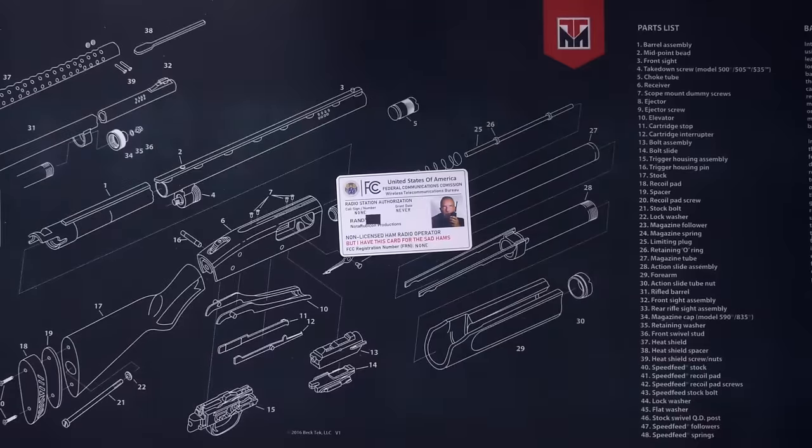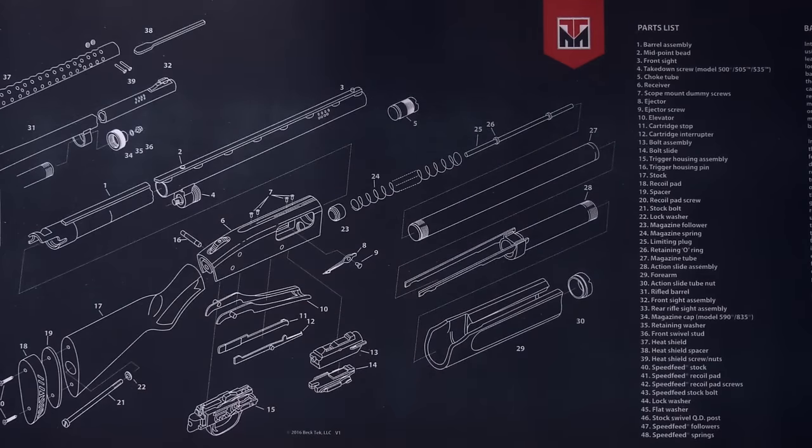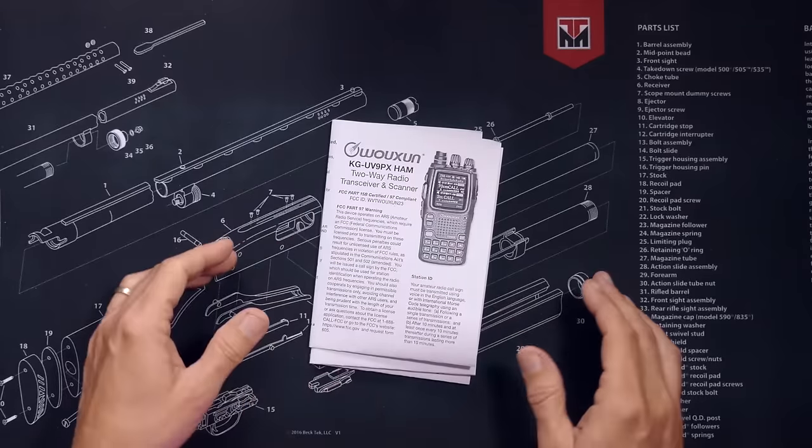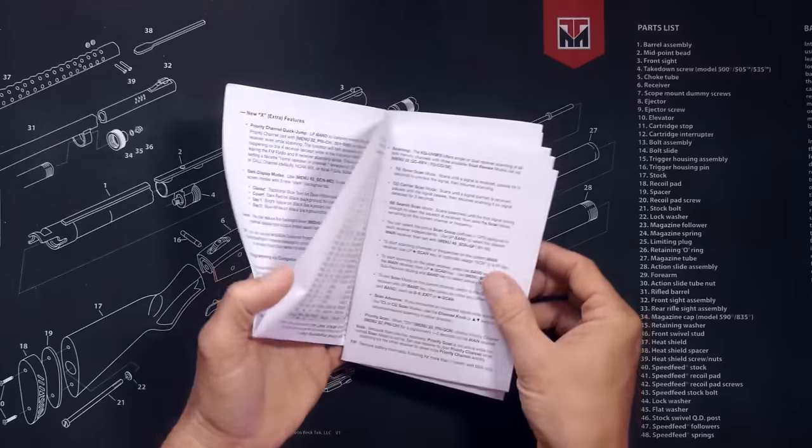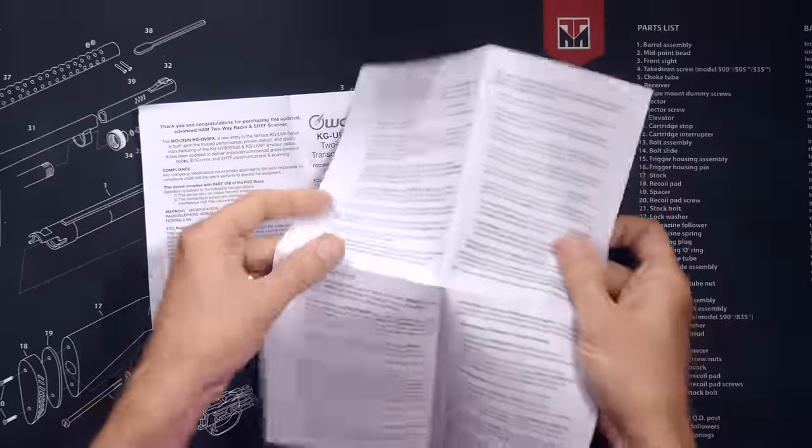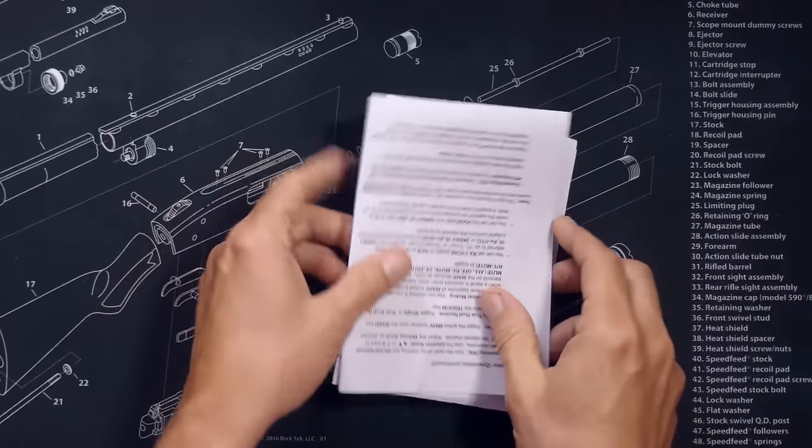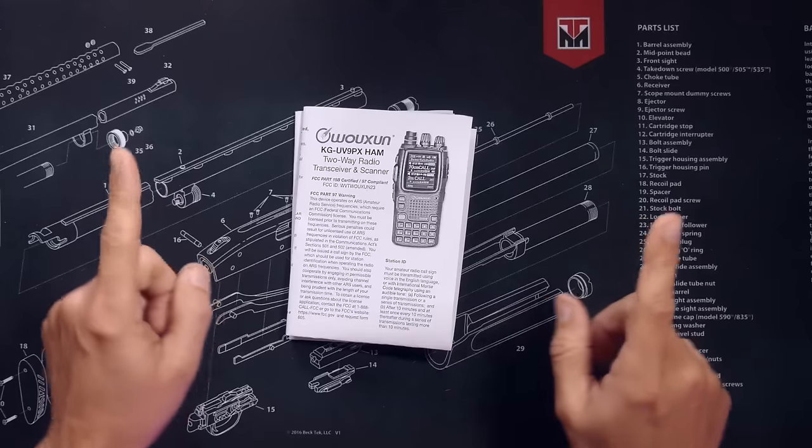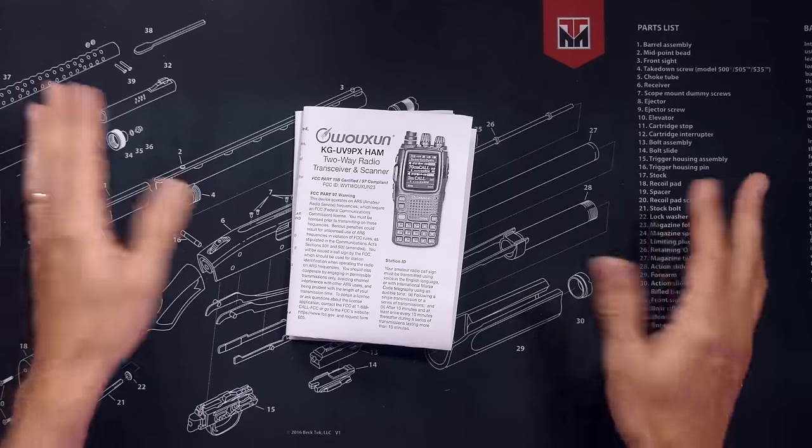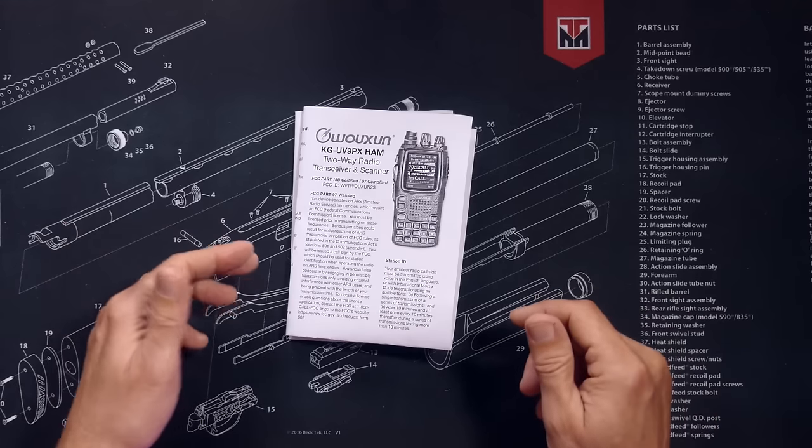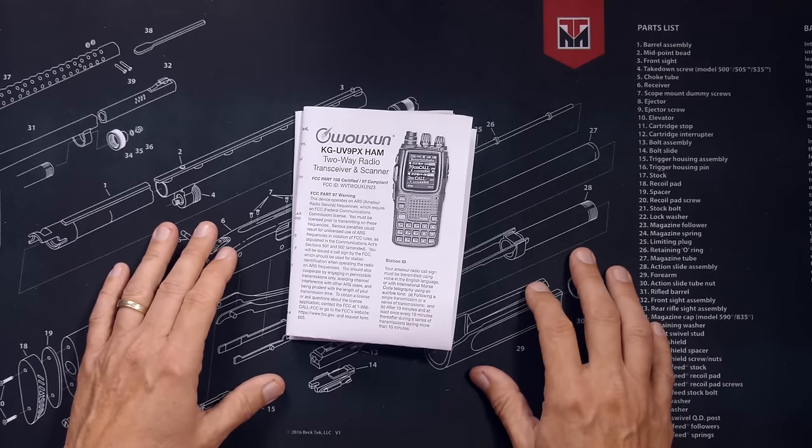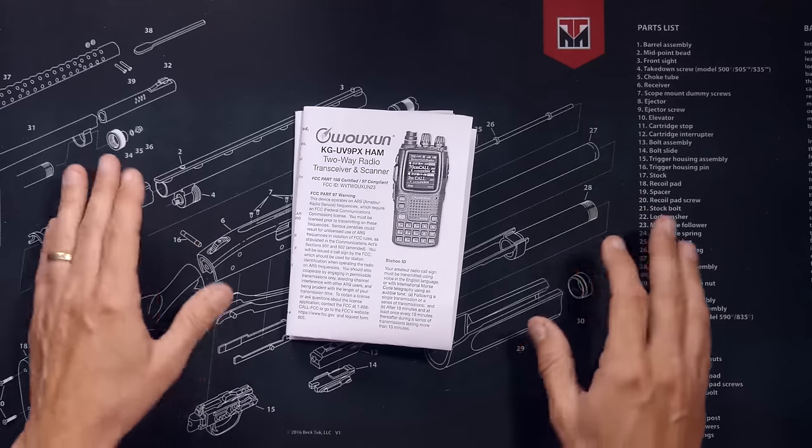So when you purchase the Wuxin Ocean KG-UV9PX ham radio, in the box you will receive a user manual. Actually, it is more like a quick start guide written in perfect English, and it is written in perfect English because it was written by BetterSafe Radio, who is the only authorized reseller for this radio. Not only is BetterSafe Radio located right here in the communist country of California, but BetterSafe Radio is also an independently owned small business.